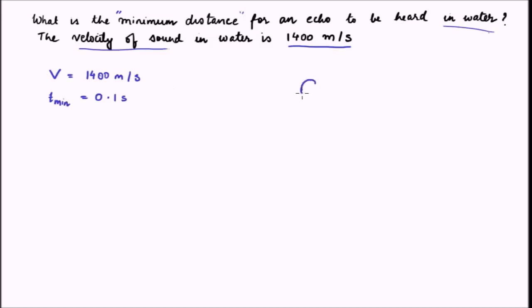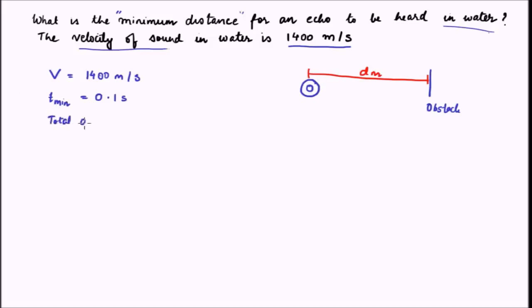Now let us draw a diagram. Say this is the observer and say this is the obstacle. We need to find the minimum distance dm so that the sound has at least 0.1 second to travel back after reflection. The total distance that the sound has to travel is from the observer to the obstacle and back, which is 2 times dm.